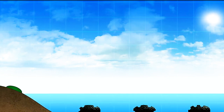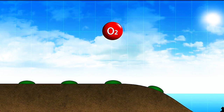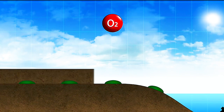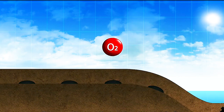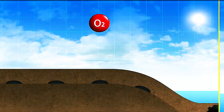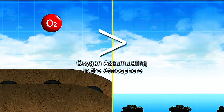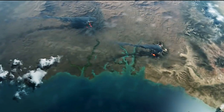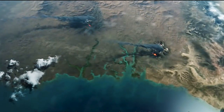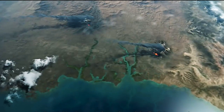On land, however, dead cyanobacteria got buried under sediments, so oxygen that would have broken down their bodies instead ended up in the atmosphere. The presence of a large landmass helped increase the amount of oxygen in the atmosphere. As the total land area on the surface of the Earth increased, so too did atmospheric oxygen levels dramatically.